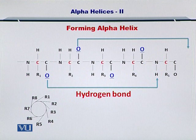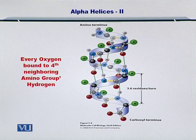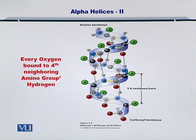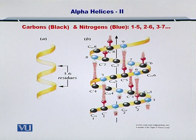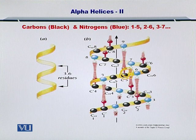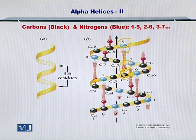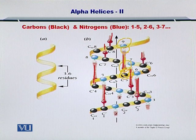So this is going to lead to the formation of a structure like this as shown here. This is an alpha helix if you look at it from the top. To summarize, every oxygen bound to the fourth neighboring amino group's hydrogen leads to the formation of such alpha helices. This interaction is shown here using a figure from your textbook. You can see the carbons are black here and the nitrogens are blue, and there is a hydrogen bond between the hydrogen and oxygen of these two, repeated as shown by these red dotted lines.